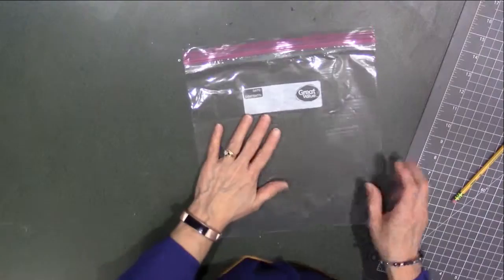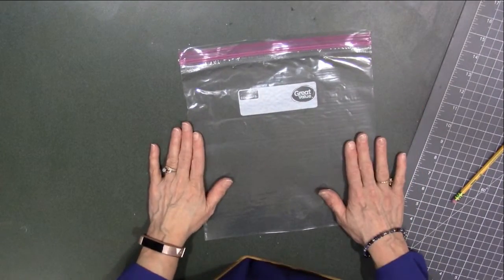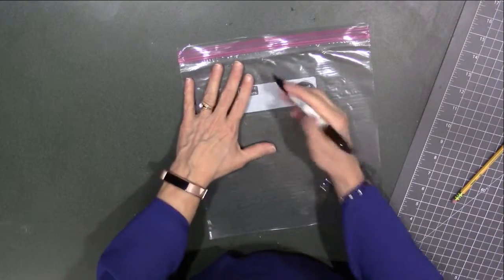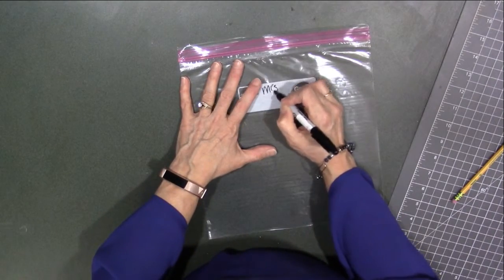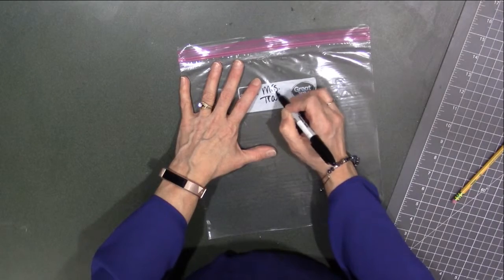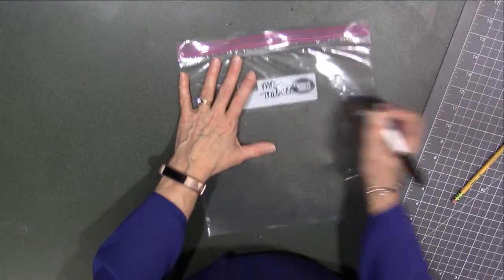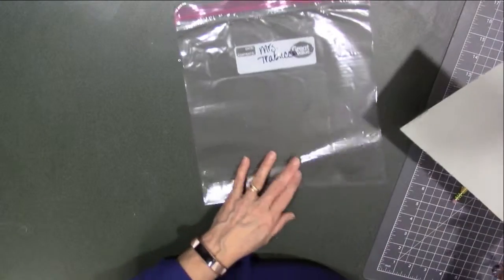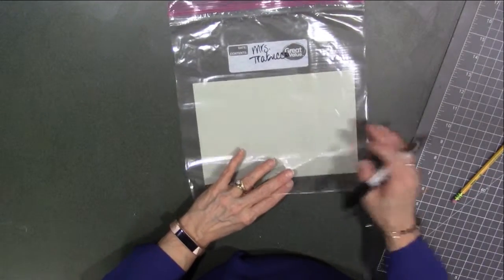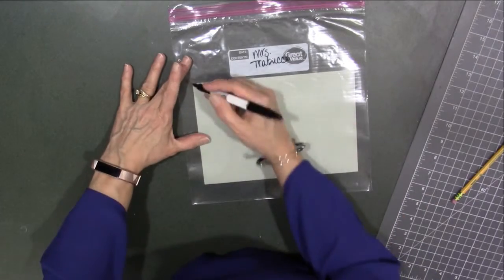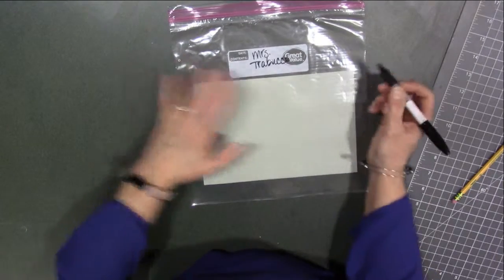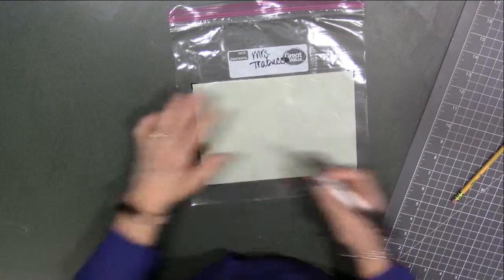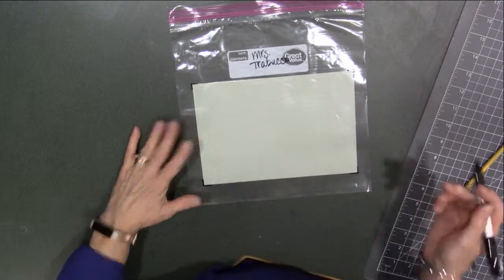The next step is to grab a Ziploc bag gallon size and on the white part, you're going to write in Sharpie marker your name and you're going to use one of the papers to place underneath and with your Sharpie marker, put a little corner mark on the size of your paper.